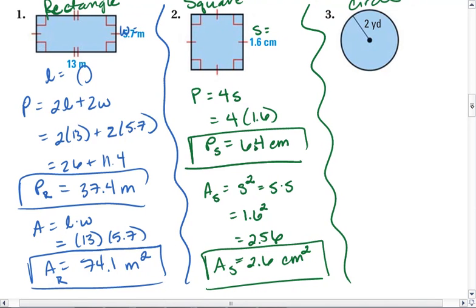Lastly, we have our circle. The circumference of a circle is 2 pi r. Here, my radius is 2. I can substitute 2 in for r. So I get 2 times pi times 2.